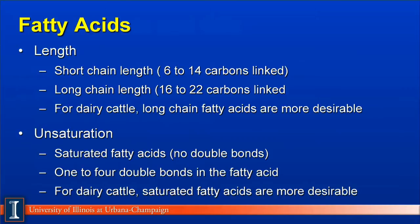When we categorize fatty acids, we can do it two different ways. The first way is the length of the fatty acids, or how many carbons are contained in the molecule. A short chain fatty acid would be those molecules that contain 6 to 14 carbons linked together. A long chain fatty acid would consist primarily of 16, 18, 20 and 22 carbons linked together. For dairy cattle, long chain fatty acids are more desirable than short chain fatty acids because of their impact on rumen fermentation.